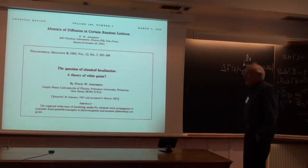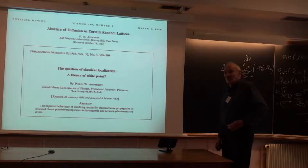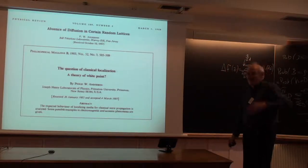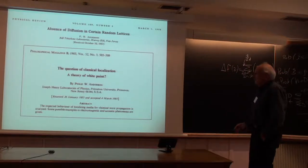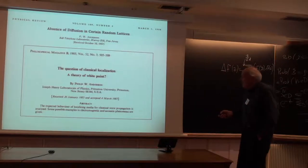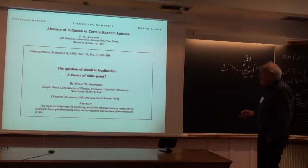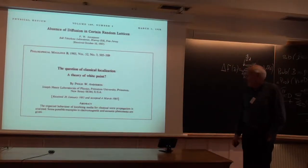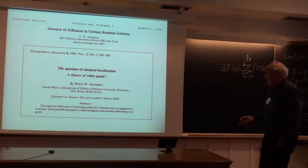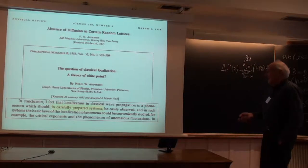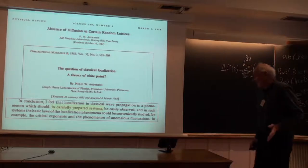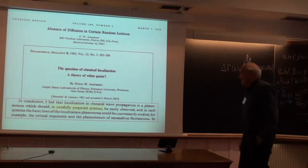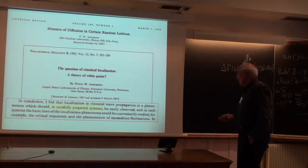Historically, Barth has given a very nice introduction into the history of this longstanding 50-plus-year story. There was this famous paper by Phil Anderson. What brought us into the game was his 1985 paper, where he claims that the mechanism of Anderson localization would also work for white paints, and would be easy. He says in conclusion: 'I feel that localization in classical wave propagation is a phenomenon that should, in carefully prepared systems, be easy to observe, and in such systems the basic laws of the localization phenomenon could be conveniently studied — for example, the critical exponent.'